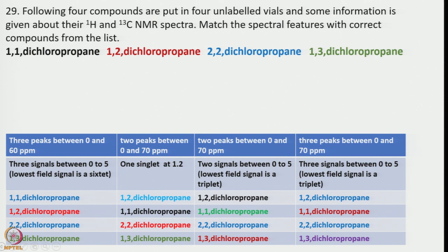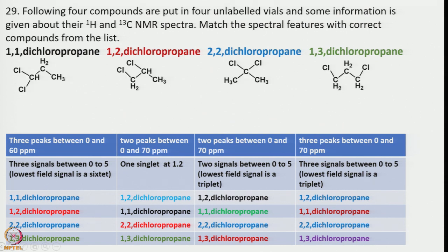It seems with 2 chlorines and propane we have looked into almost all 4 possible isomers. So now, with some information given, what we should do first is draw the structure. Once we have the structure we have to identify how many different types of signals there are in 1H NMR as well as 13C NMR spectra in each case.